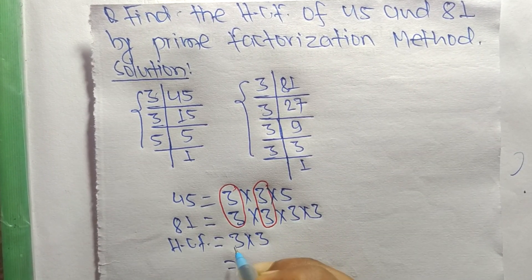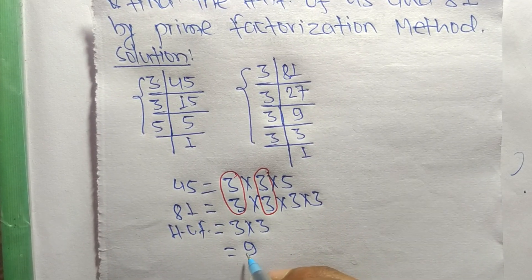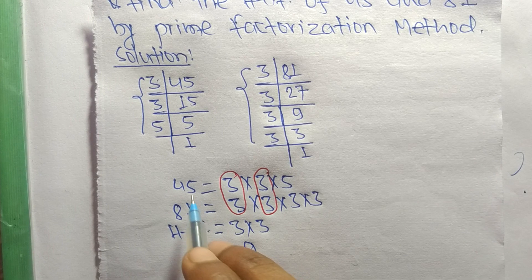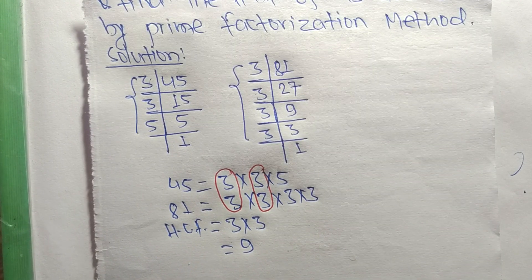So 3 times 3 equals 9. Therefore, 9 is the HCF of 45 and 81. That's all for today, and thanks for watching.